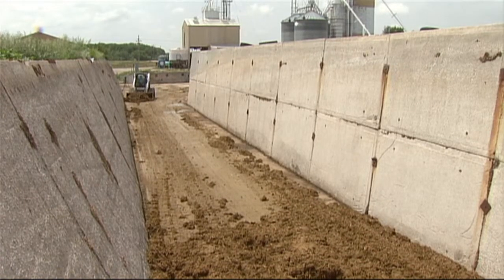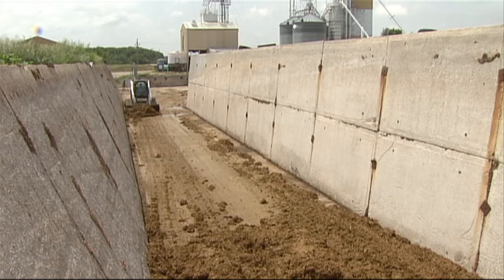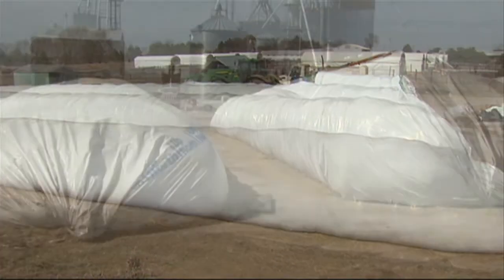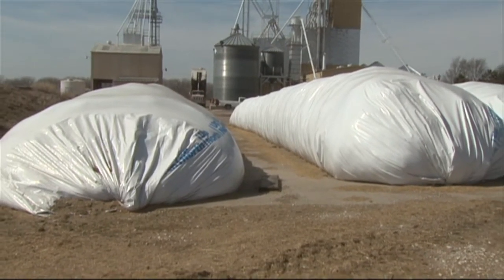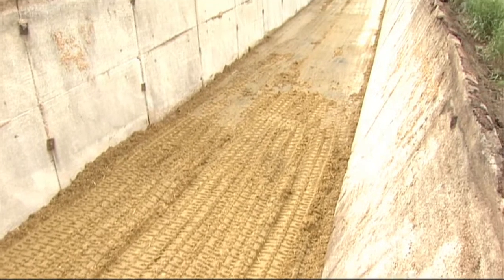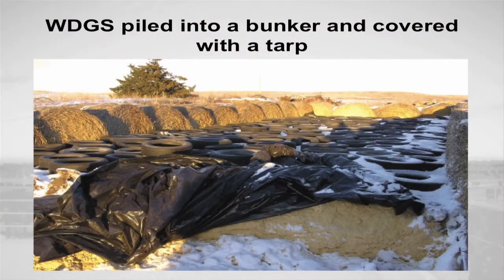There are numerous types of facilities and structures that may be used to store ethanol co-products. One method of storage incorporates the use of plastic ag bags, which does require access to bagging and mixing equipment. However, producers wanting to store larger quantities may utilize bunker storage. If producers don't have access to concrete bunkers, then round bales or other less permanent structures can be utilized to construct temporary bunkers.